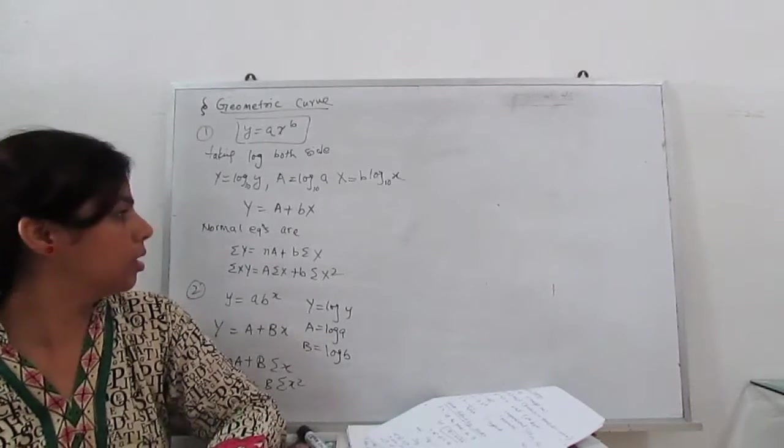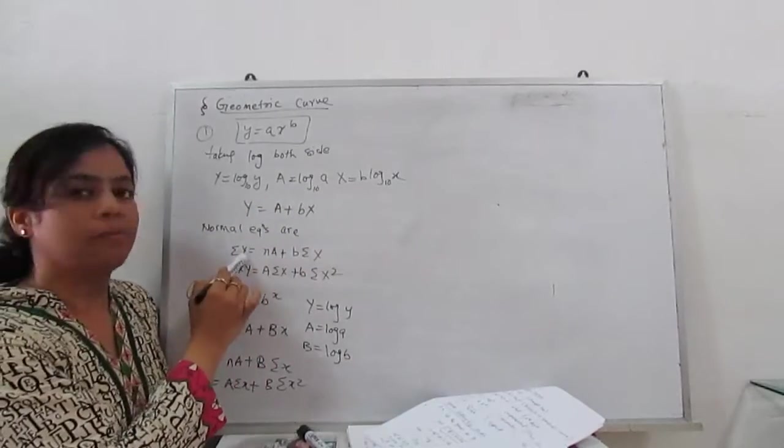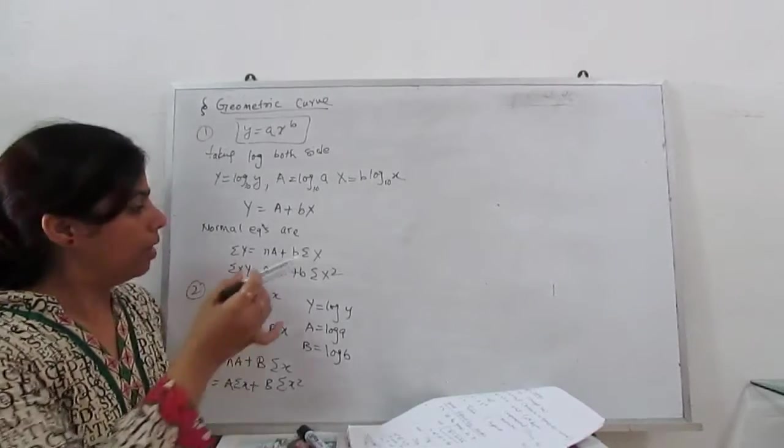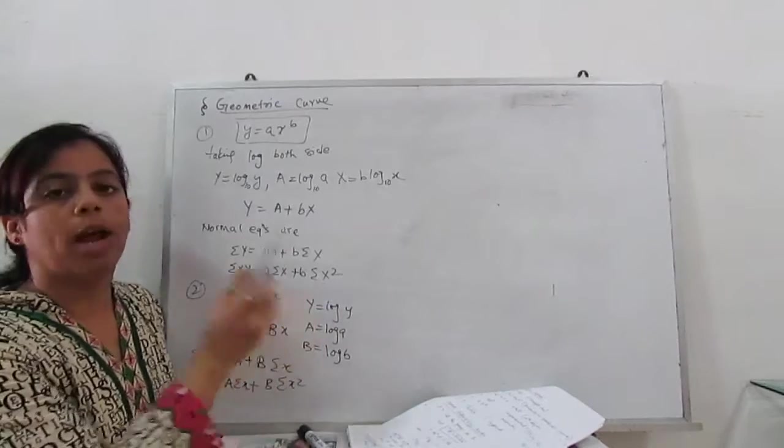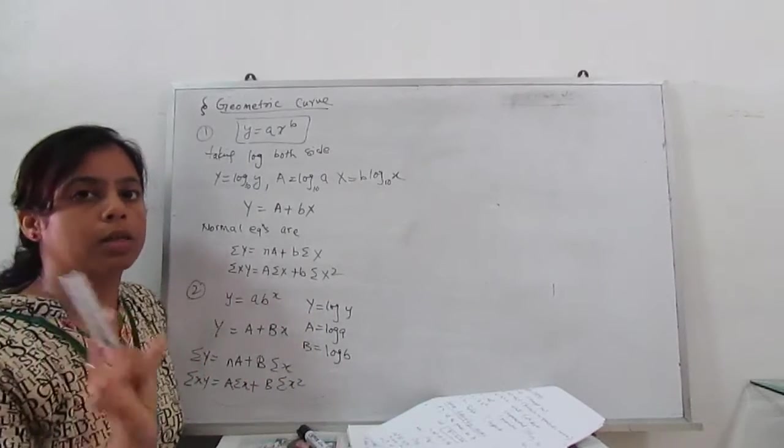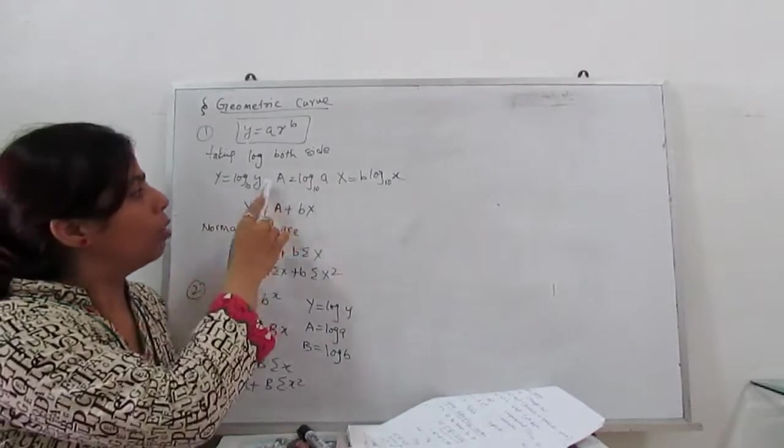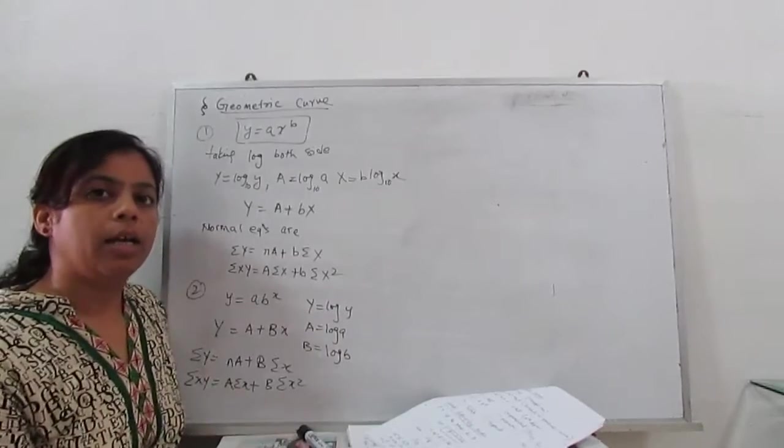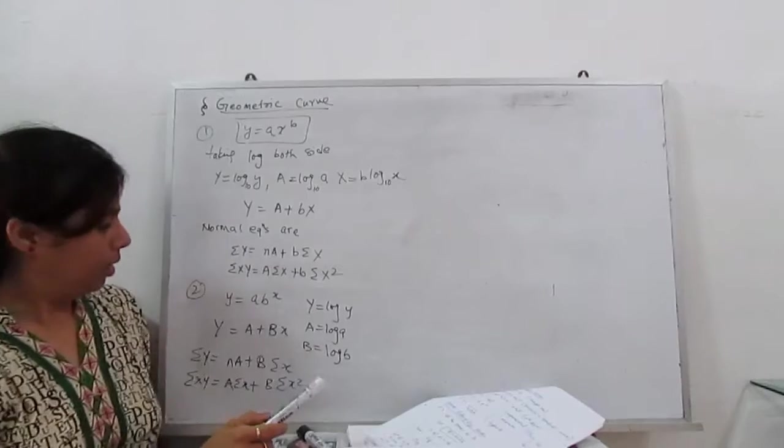You have to write the normal equations. What are our normal equations? Regarding this curve, summation Y equals nA plus b summation capital X. When you write the notation, always be careful. It's capital or a small letter because at the end, all the capital letters, you have to take the antilog. At first, taking log. At the end, you have to take antilog and substitute in the required curve.